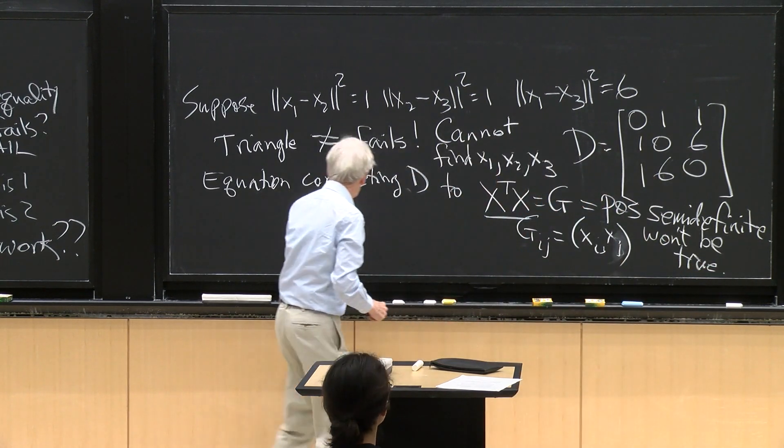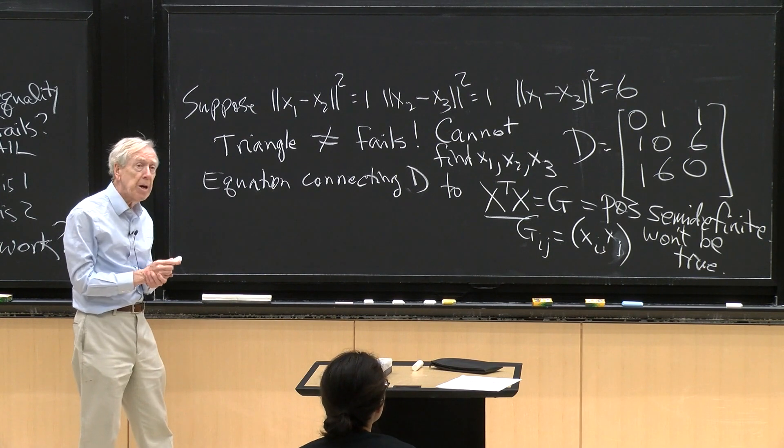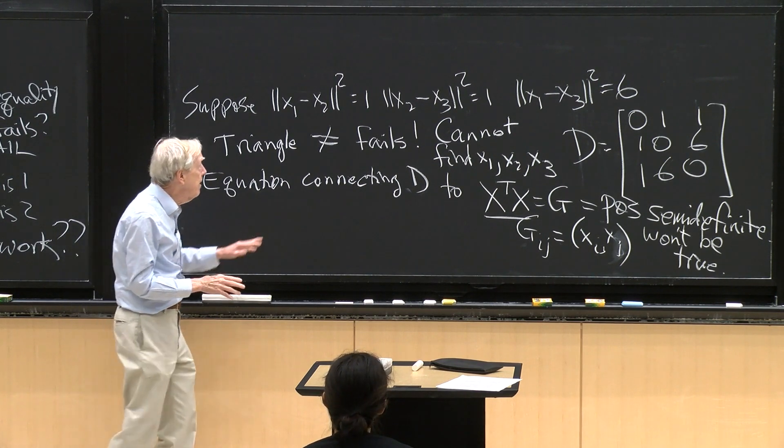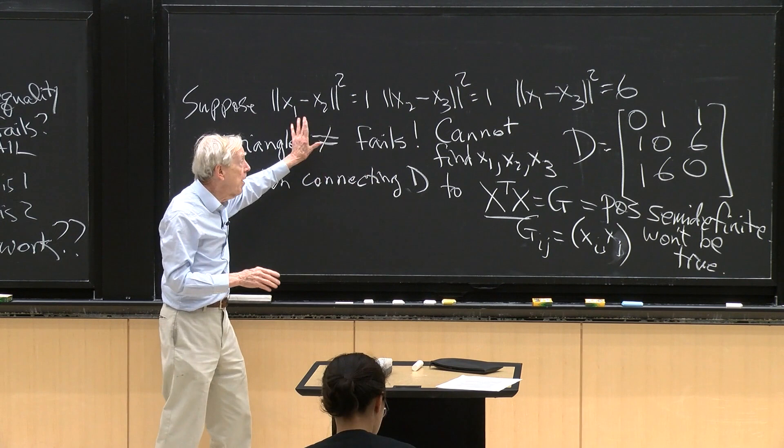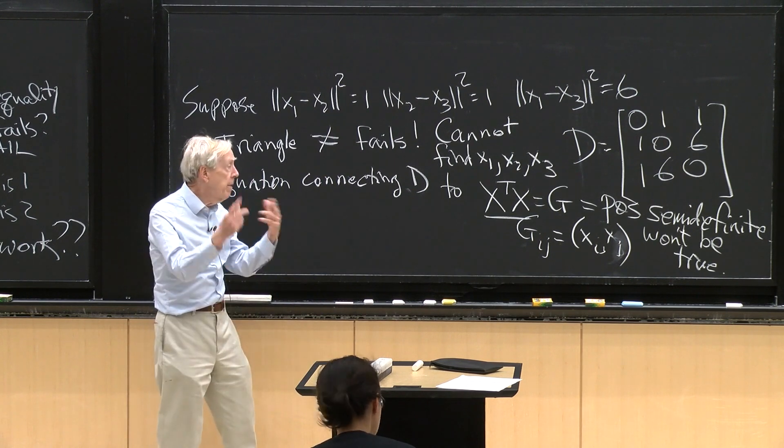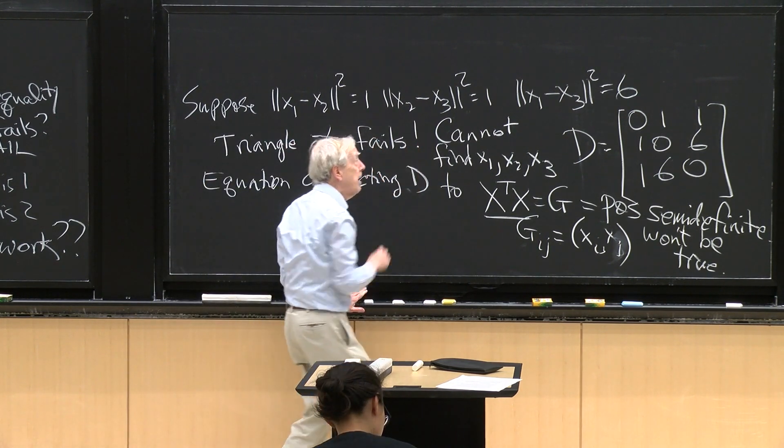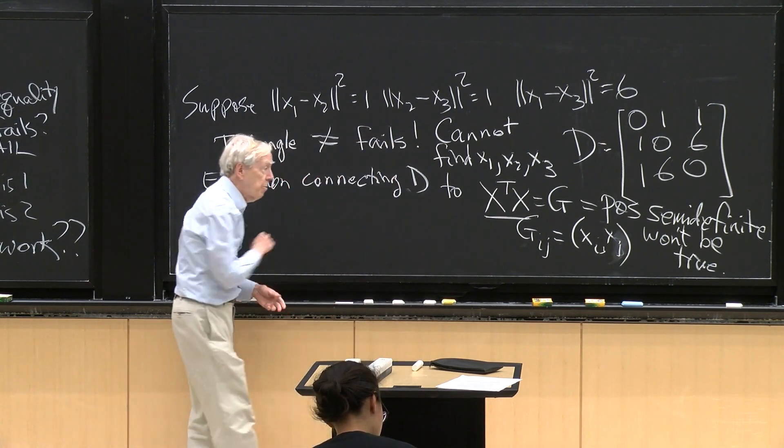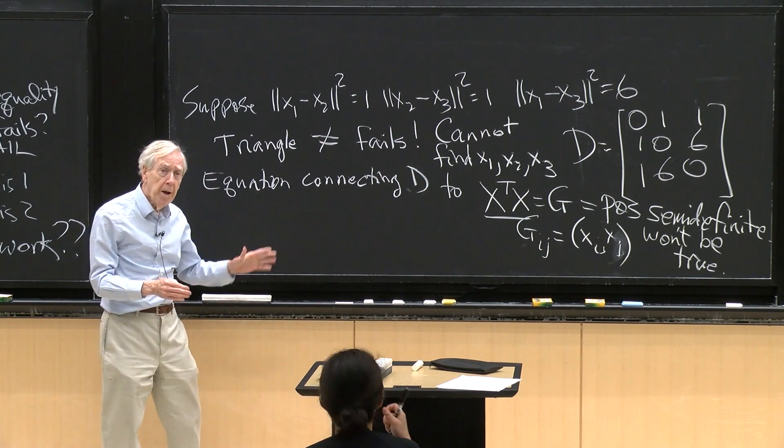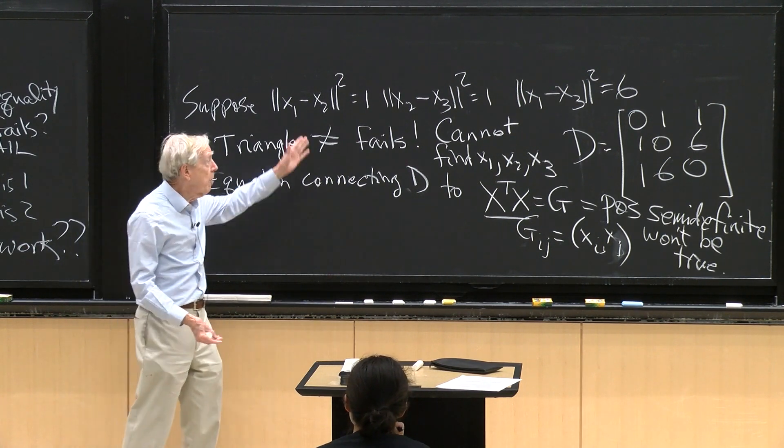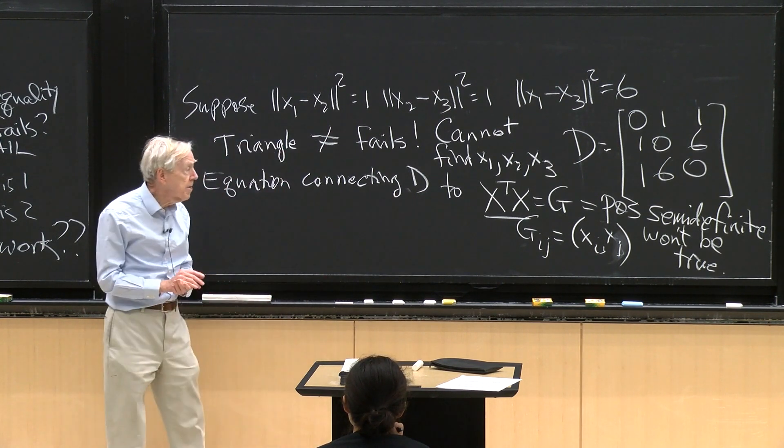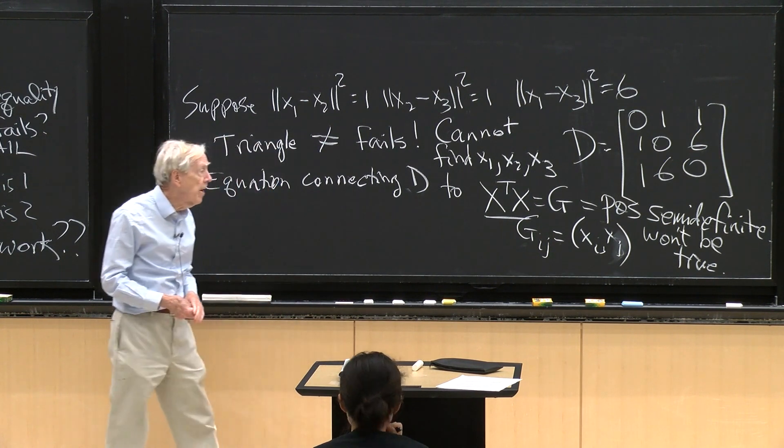So gij is the matrix of dot products. And the great thing was that we can discover what that matrix is. That matrix G comes directly from D. And of course, what do we know about this matrix of cross products? We know that it is positive semi-definite. So what goes wrong? Just in a word, when we write out that equation and discover what g is, if the triangle inequality fails, we learn that g doesn't come out positive definite.